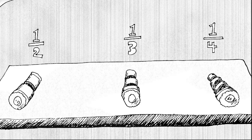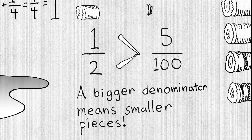One-fourth has smaller pieces because we had to cut it four times. This is very important to remember: a bigger denominator means smaller pieces. For example, the fraction one-half represents much more than five one-hundredths. Even though five and one hundred seem bigger than one and two, think about what a fraction means. If you took a sushi roll and cut it into a hundred almost microscopic pieces, even if you had five of them, it's still very little sushi. A bigger denominator means smaller pieces — don't let those numbers fool you.